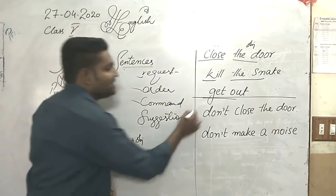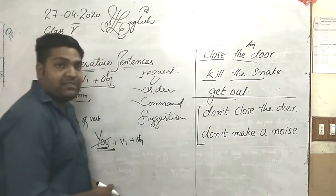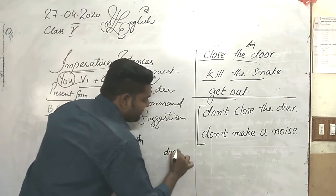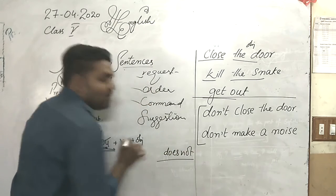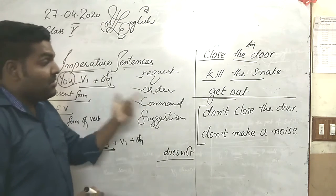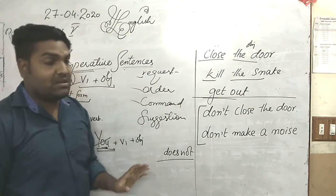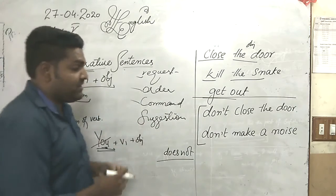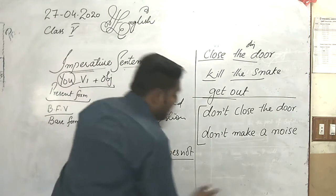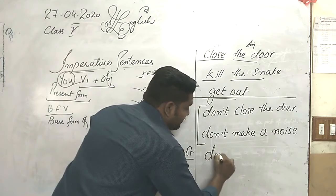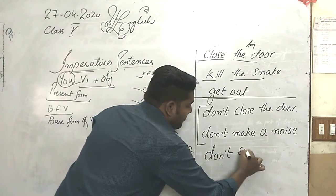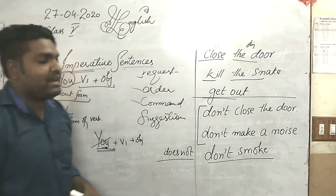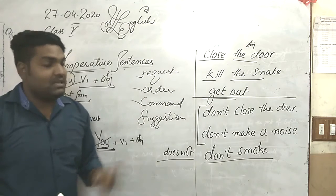Now let me discuss the negative sentence of imperative sentences. We always use 'do not' — we do not use 'does not'. For example: 'Do not close the door', 'Do not make a noise.' A very general example you have seen in public areas: written 'Don't smoke.'